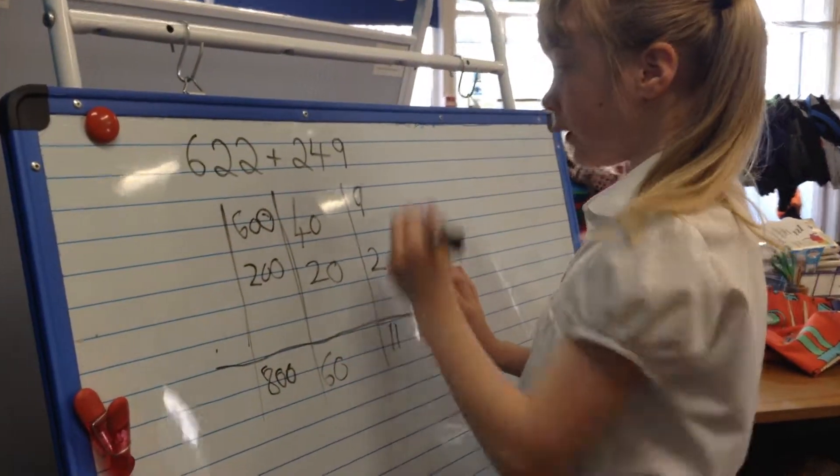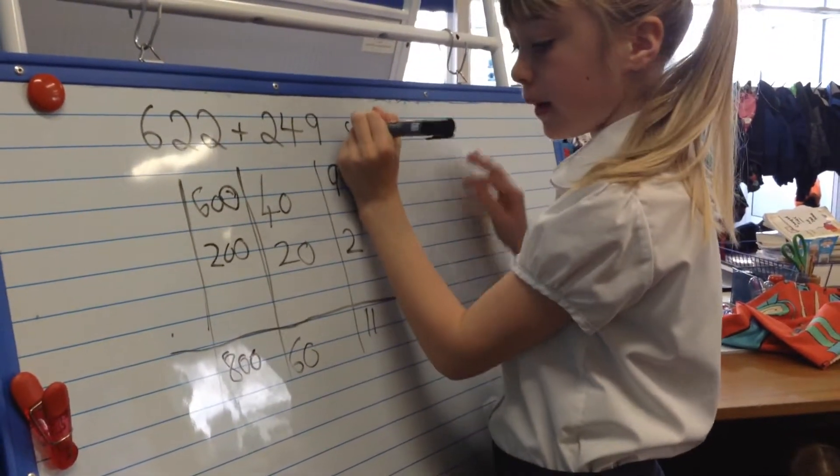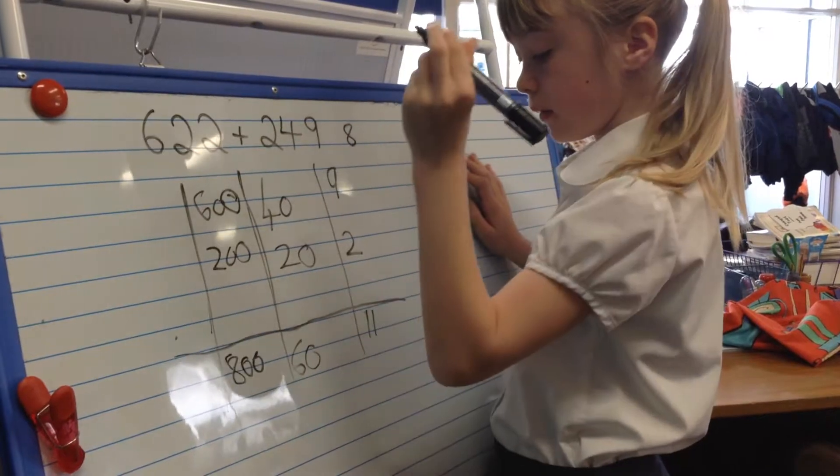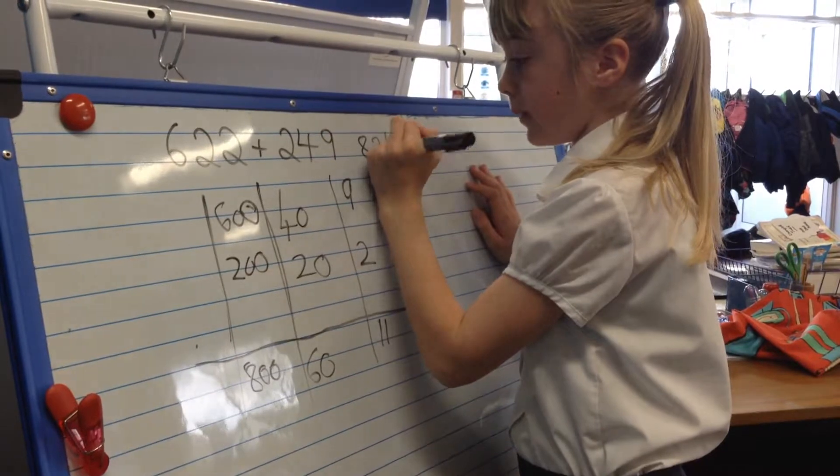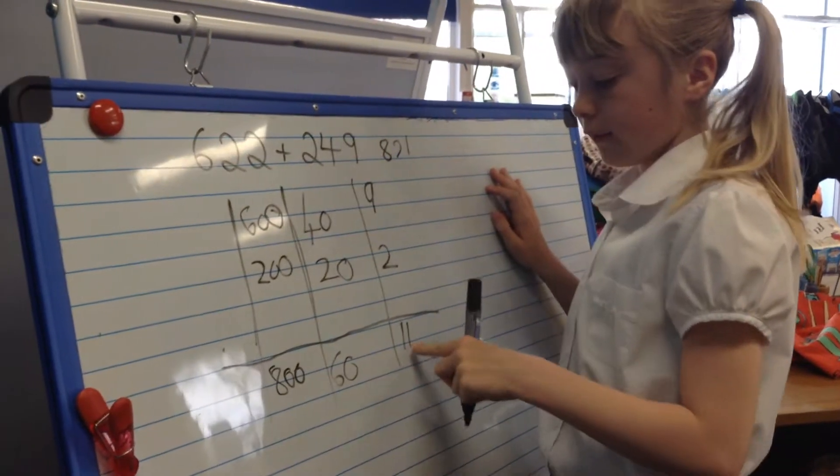And then you would put them together and write it at the top and it would be 800 and 3, and then you would have to write 71 because you have to add the 10 on.